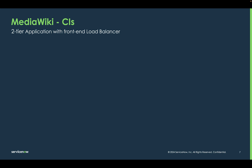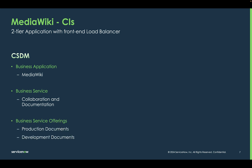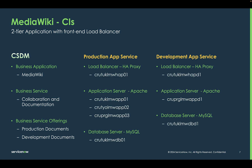For the purposes of The Art of the Possible, we're looking at using the MediaWiki business application. MediaWiki is a free open-source product that powers thousands of wikis, including Wikipedia. Leveraging the CSDM, we're going to name our business application MediaWiki. Our business service is going to be Collaboration and Documentation, and we'll be providing two offerings: a production document and a development document offering. It is inferred that we're going to have a production stack and a development stack.